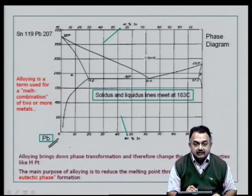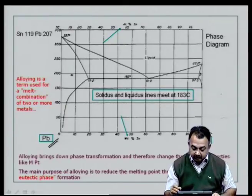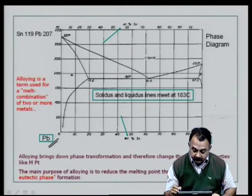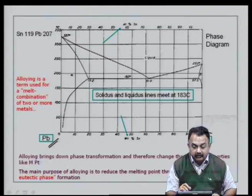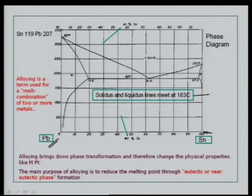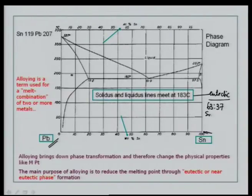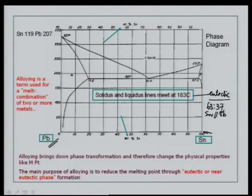If you look at mixing tin and lead — individual metals to form an alloy — this phase diagram represents the mixing of the individual metals. You can see the solidus and liquidus portions. In this area at the bottom, we have already located the 63-37 composition: 63% tin and 37% lead. This is the very common material that has been used in the industry for decades, and the reliability of this solder alloy has been well established. Alloying is a term used for a melt combination of two or more metals — in this case, tin and lead.